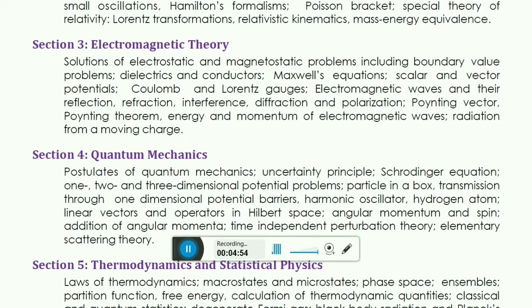Then the very important thing is Poynting vector. Poynting vector is basically 1 by mu0 E cross B. And Poynting theorem, that is a theorem on which Poynting gave. Then after that, energy and momentum of electromagnetic waves, radiation from a moving charge. This last topic, radiation from a moving charge, basically only a few things you need to study from here. I will tell you over time what you need to read.